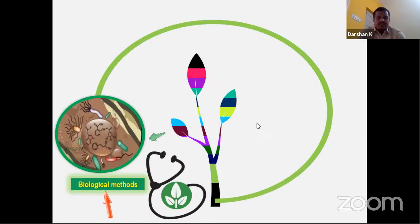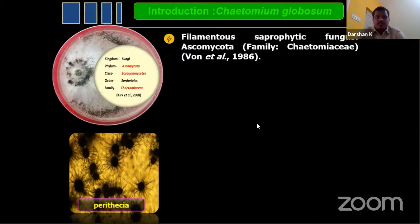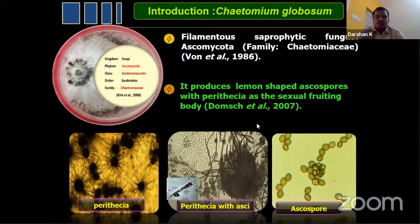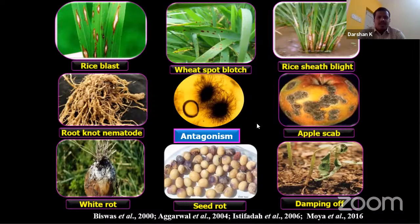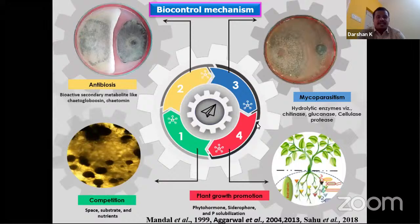In nature, there are plenty of worthy microbes. Among them, Chaetomium globosum is emerging as an internationally recognized biocontrol fungus. It is a well-known producer of lemon-shaped ascospores in globose-shaped perithecia surrounded by appendages. It has been effective against several seed and soil-borne pathogens through various biocontrol mechanisms like antibiosis, mycoparasitism, competition, and plant growth promotion.